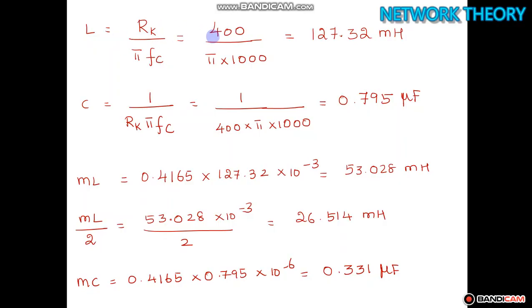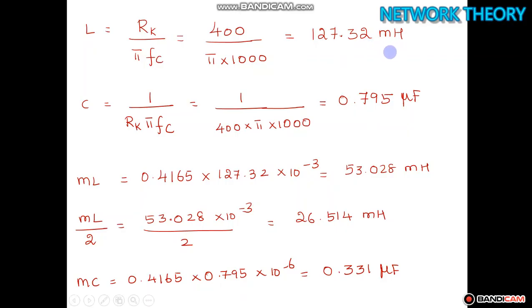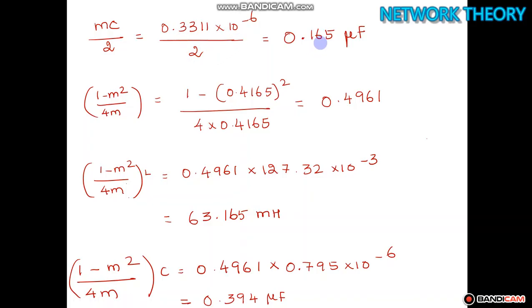Next, find L by substituting Rk = 400 ohms and fc = 1000 Hz into L = Rk/(π·fc), giving L = 127.32 mH. Then C = 1/(Rk·π·fc) = 0.795 μF. From these: mL = 0.4165 × 127.32 mH, so mL/2 = 26.514 mH. And mC = 0.331 μF, so mC/2 = 0.165 μF.